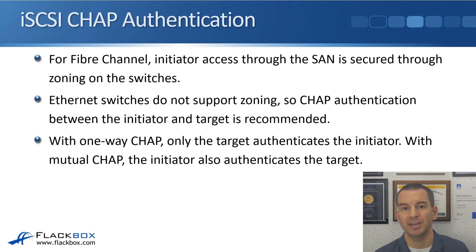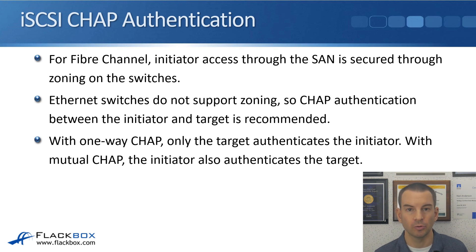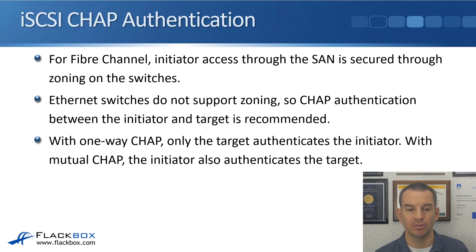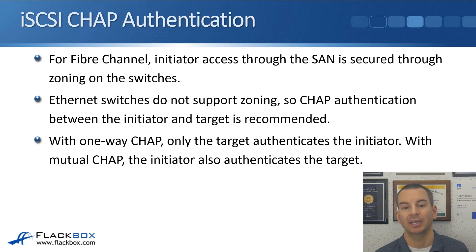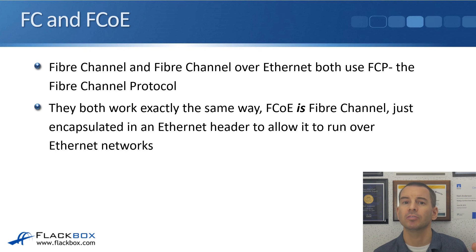For Fibre Channel, initiator access through the SAN is secured through zoning on the switches. Ethernet switches used for iSCSI do not support zoning, so the way we usually secure client access with iSCSI is through CHAP authentication between the initiator and the target. With one-way CHAP, only the target authenticates the initiator — the storage system checks that this is a valid client. With mutual CHAP, that's two-way — the initiator will also authenticate the target. You'll see more when we get into the actual iSCSI configuration coming up soon.